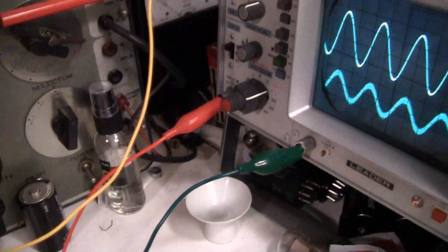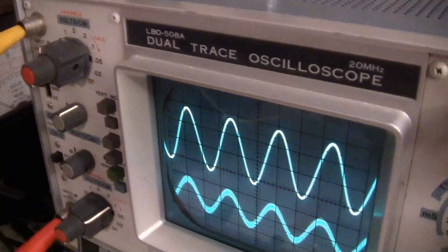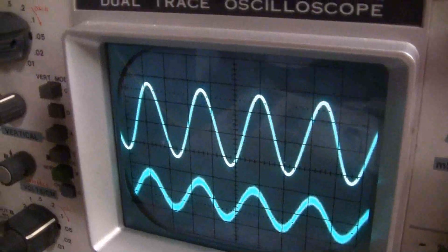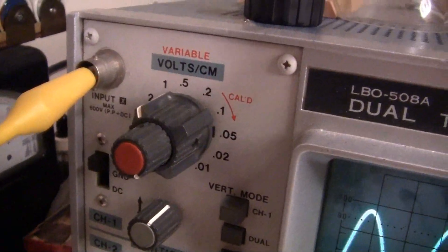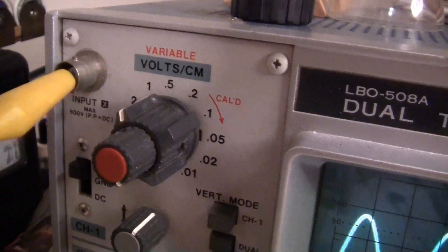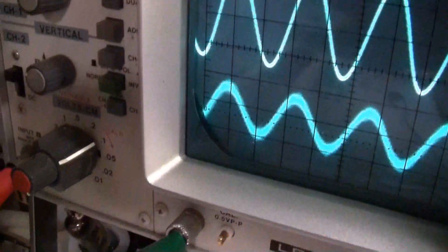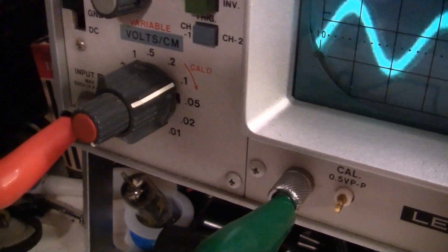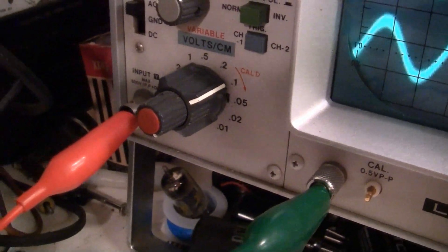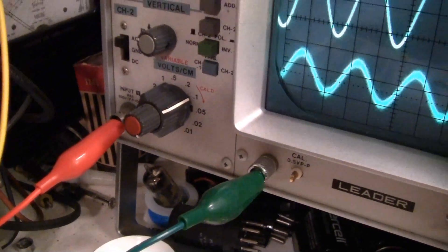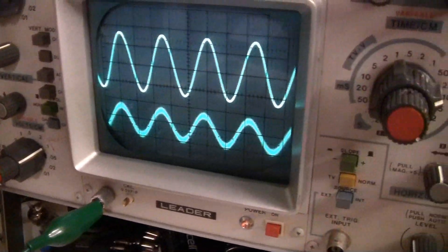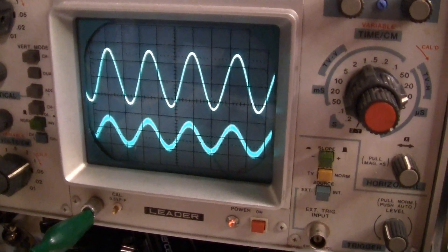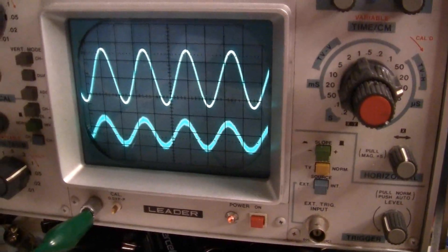Looking at it at the scope, it's going up to channel 1 which is the top trace here. If you take a look at the setting of that switch, it's set at 1, and the bottom is set at 0.1. That's the generator. So we've got some pretty good amplification, and you can see that it is non-inverting.